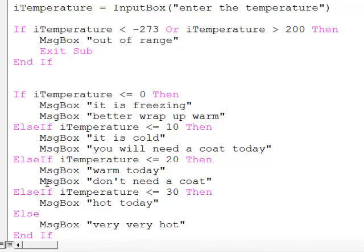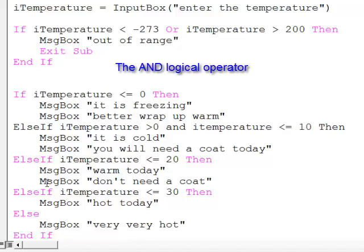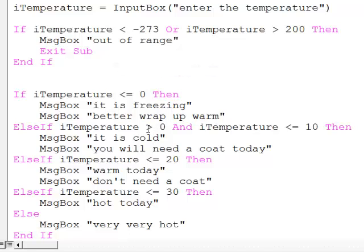if I temperature is greater than zero and I temperature is less than or equal to 10, then it's cold. This is called a range check. I'm checking that it is within this range.